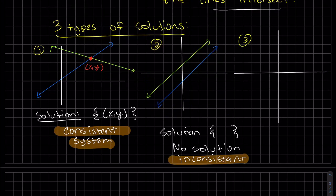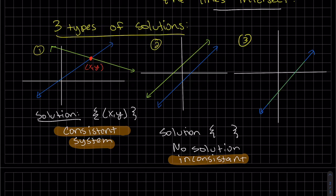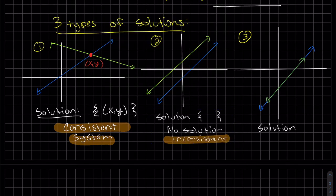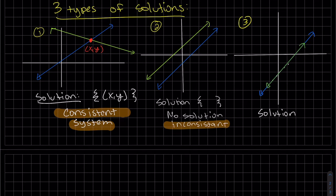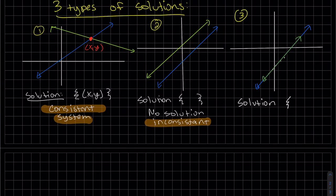The last thing that can happen with two equations and two unknowns is that they're also parallel, but it's also the same line. A lot of times they are disguised. One's a multiple of the other. But here our solution is all the points on the line. It's an infinite solution. So we write it as an ordered pair.